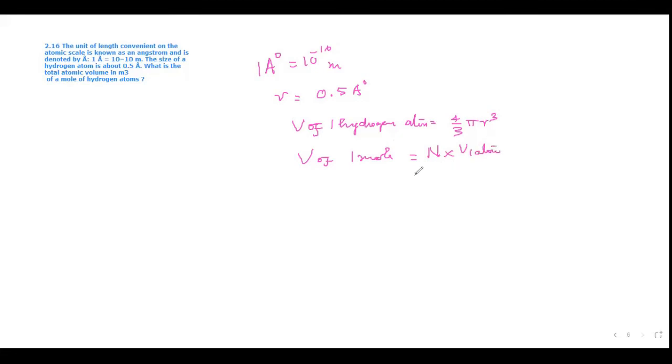Avogadro number 6.023 into 10 the power of 23 into 4 by 3 into 3.14 into R, that is 0.5 into 10 to the power of minus 10 the whole cube.